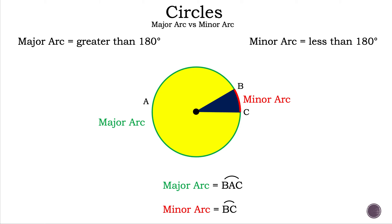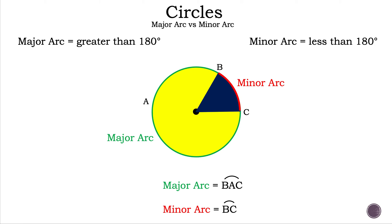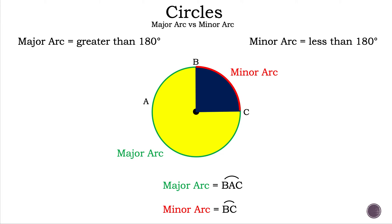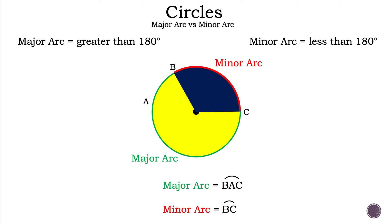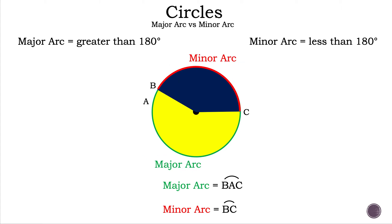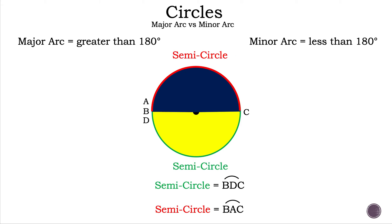Now let's make the minor arc a little bit bigger to see what happens. The major arc decreased a little bit, but we still have that major arc as arc BAC and our minor arc is still BC — because our major arc is still greater than 180 degrees. We've made a quarter turn, or 90 degrees, and our major arc and minor arc labels are still the same as we continue increasing.